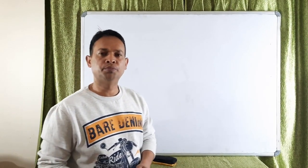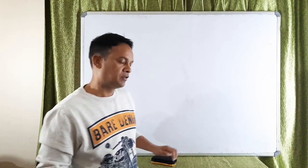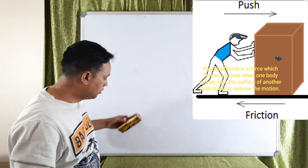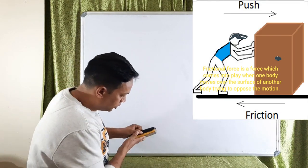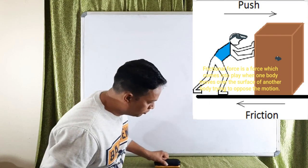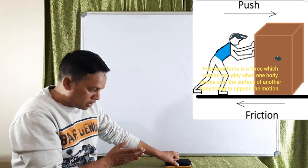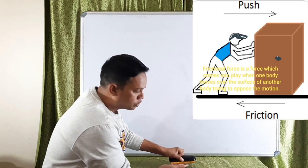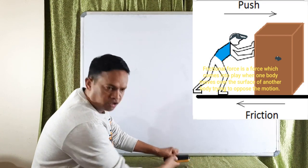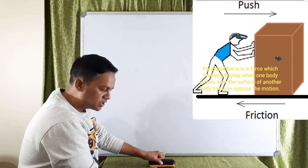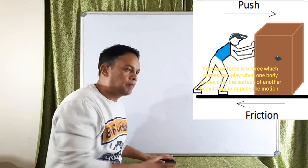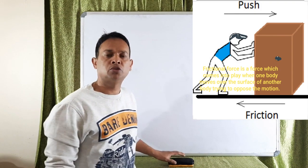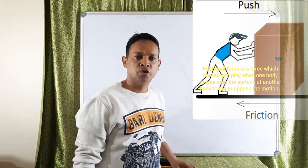Another example of contact force is frictional force. When a body moves over the surface of another body, a force comes into contact between the two surfaces that tries to stop or oppose the motion. That force which opposes the motion is called frictional force.